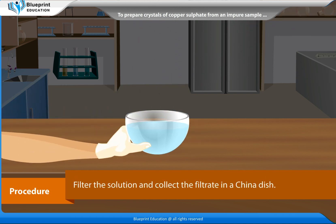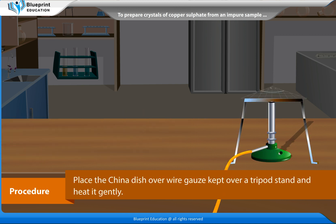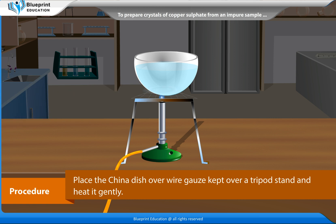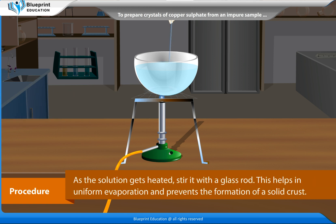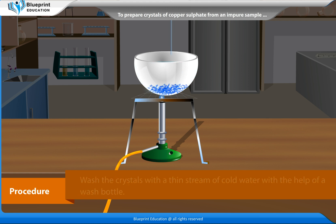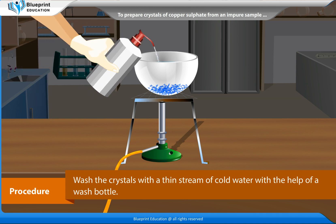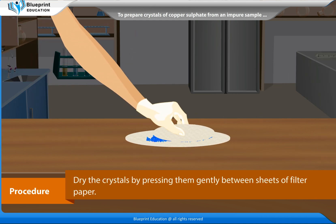Filter the solution and collect the filtrate in a China dish. Place the China dish over wire gauze kept over a tripod stand and heat it gently. As the solution gets heated, stir it with a glass rod. This helps in uniform evaporation and prevents the formation of a solid crust. Wash the crystals with a thin stream of cold water using a wash bottle, then dry the crystals by pressing them gently between sheets of filter paper.